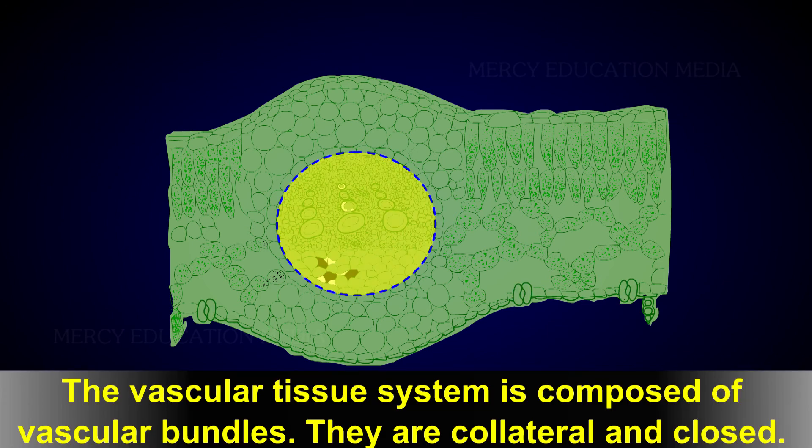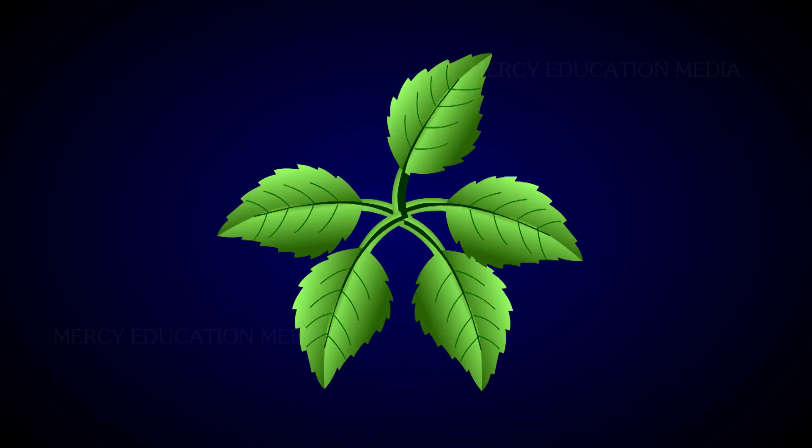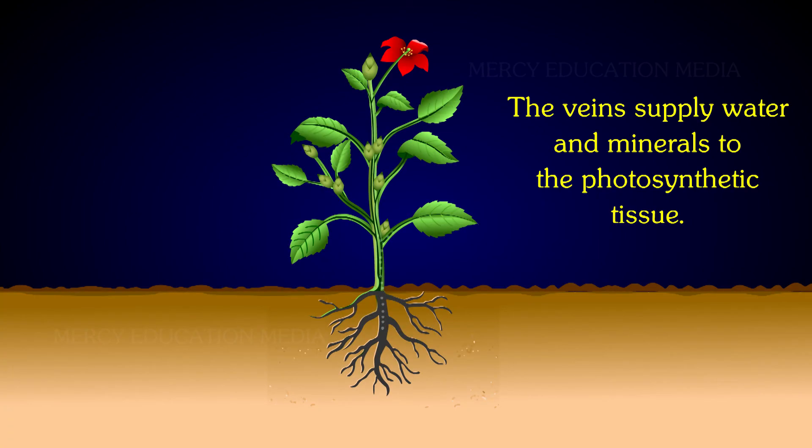The vascular tissue system is composed of vascular bundles. They are collateral and closed. The vascular tissue forms the skeleton of the leaf and is known as veins. The veins supply water and minerals to the photosynthetic tissue.